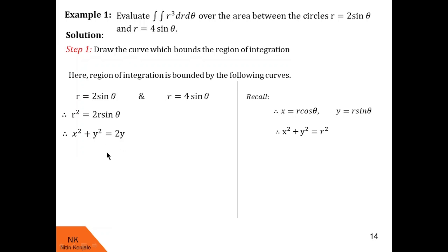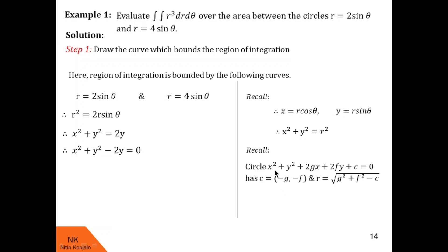Comparing with the standard circle x² + y² + 2gx + 2fy + c = 0, whose center is (−g, −f) and radius is √(g² + f² − c), we find g = 0 and f = −1. So the center is (0, 1) and the radius is 1.